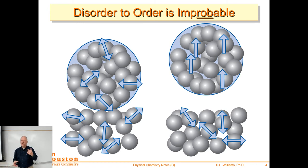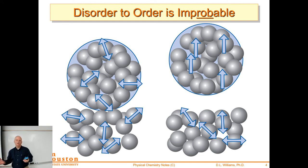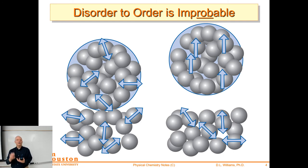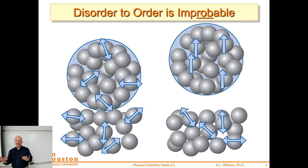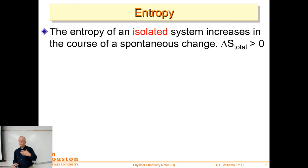Disorder to order is improbable — mathematically not impossible, but something on the order of 10^(-50) or 10^(-100), so improbable as to be impossible. That would look like a ball on a table where all the atoms randomly vibrate and happen to hit the ball in a non-random, coordinated way so it hops off. You could calculate the probability of five atoms having a vertical velocity simultaneously — but it would be such a small number as to be essentially impossible. The entropy of an isolated system increases in the course of a spontaneous change.